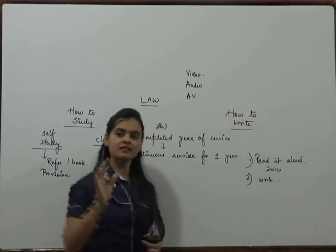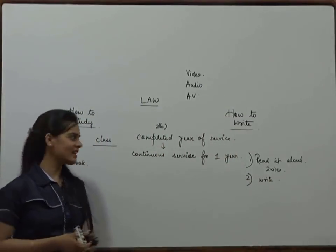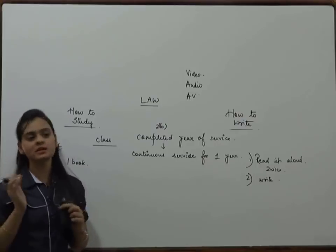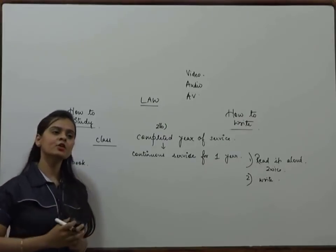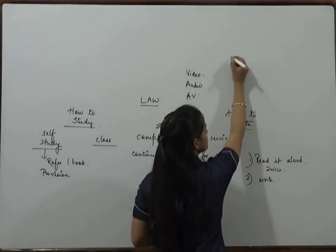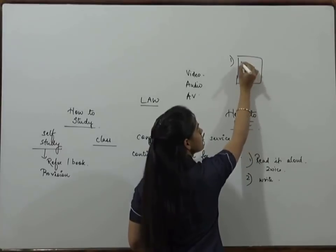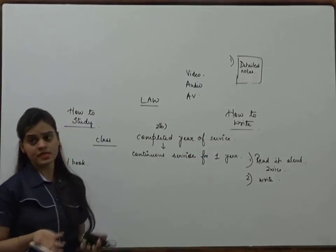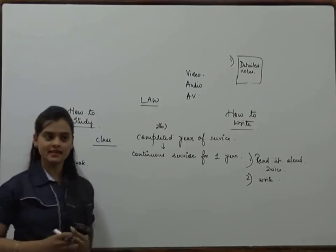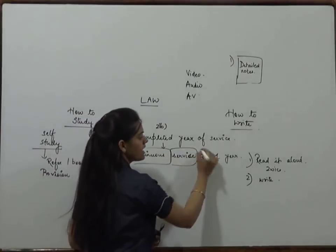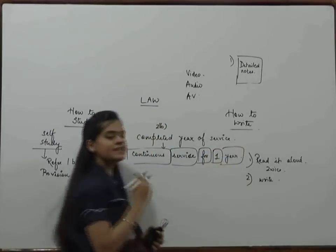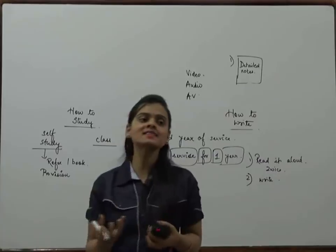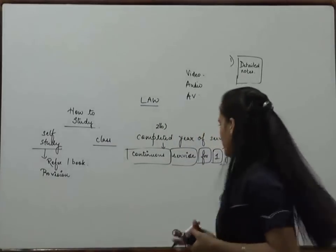Second, write it once. What will writing do? We are copying it by looking, yes — but writing does two things. One, when you write, something enters your mind. And secondly, your notes get prepared — detailed notes. So first you read aloud, second you write. Now what next? Break it into parts. The bigger the definition, break it into parts and interpret those parts, or try to understand the meaning of those parts.